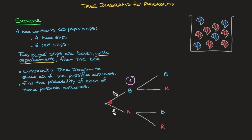Just as we did for the first paper slip, we have to add probabilities along these branches. This is where the two words 'with replacement' become very important. Since after we took the first paper slip we put it back inside the box, the probabilities of picking either blue or red won't be affected at all — there will still be 10 paper slips in total, and still 4 blues and 6 reds. Consequently, the probability of picking a blue slip after having picked blue first will still be 4 out of 10, and the probability of picking red will still be 6 out of 10. The same applies for the branches below — had we picked red first and put it back, the probability of blue for the second is 4 out of 10, and red is 6 out of 10.